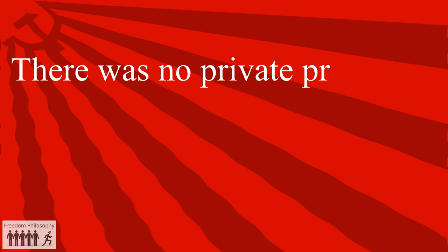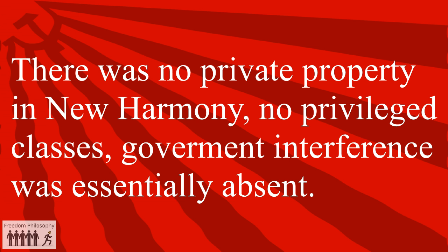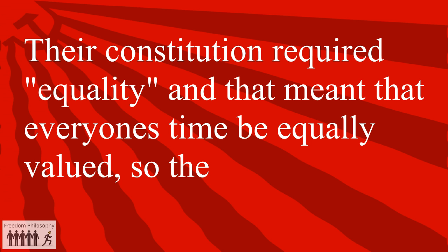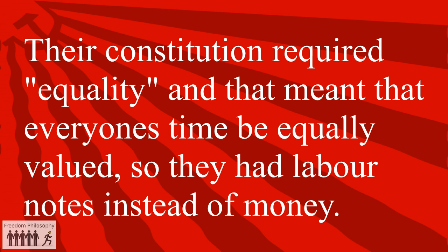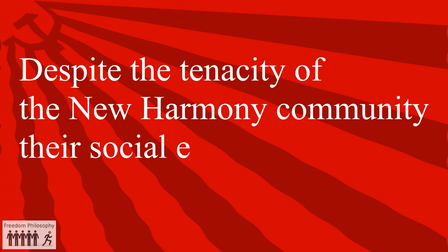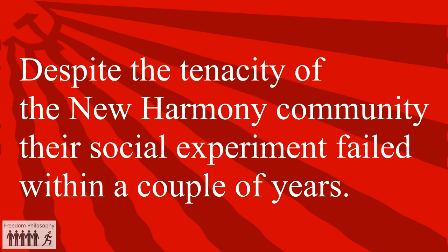There was no private property in New Harmony, no privileged classes. Government interference was essentially absent. The constitution required equality, and that meant that everyone's time be equally valued, so they had labour notes instead of money. Despite the tenacity of the New Harmony community, their social experiment failed within a couple of years.